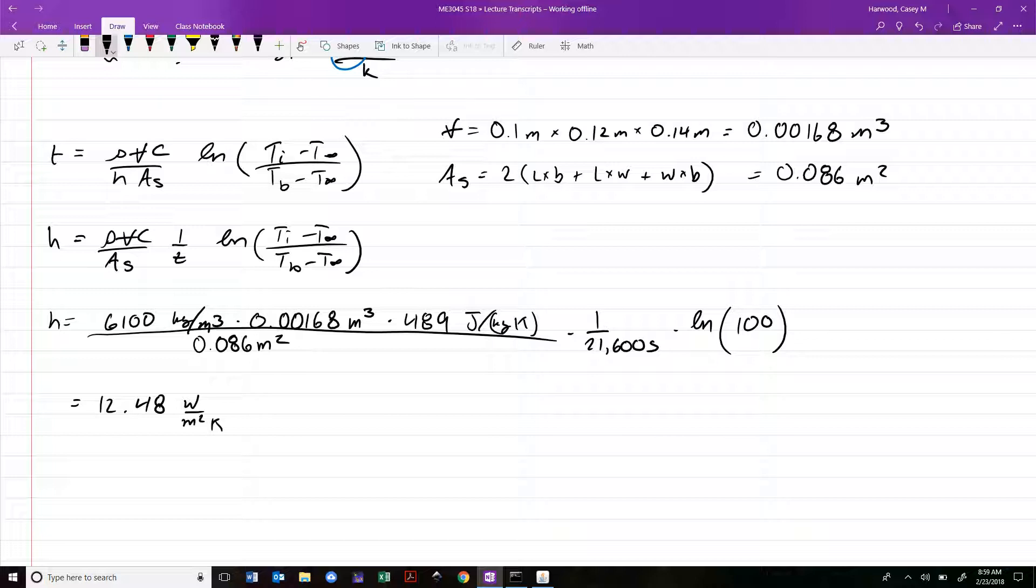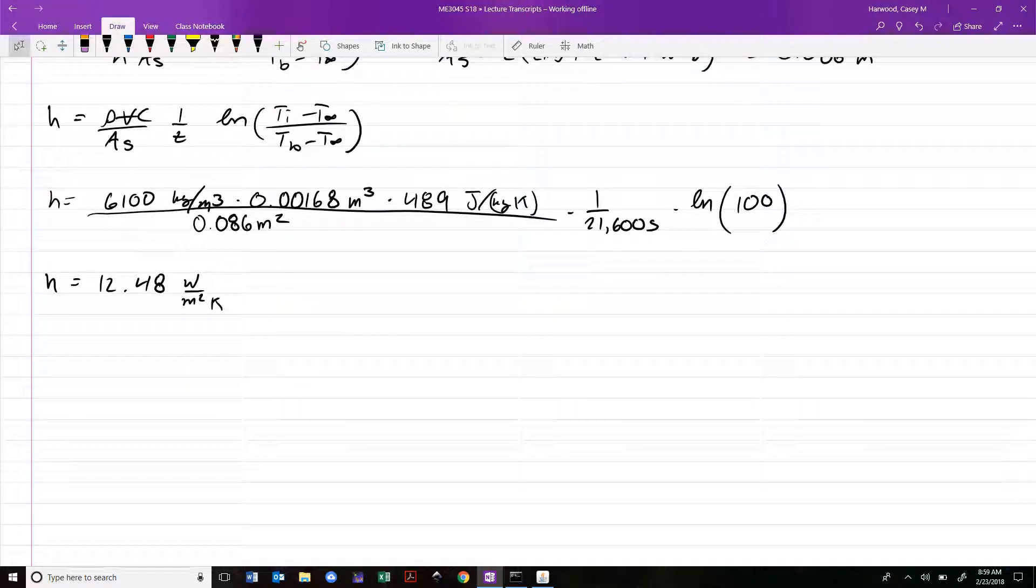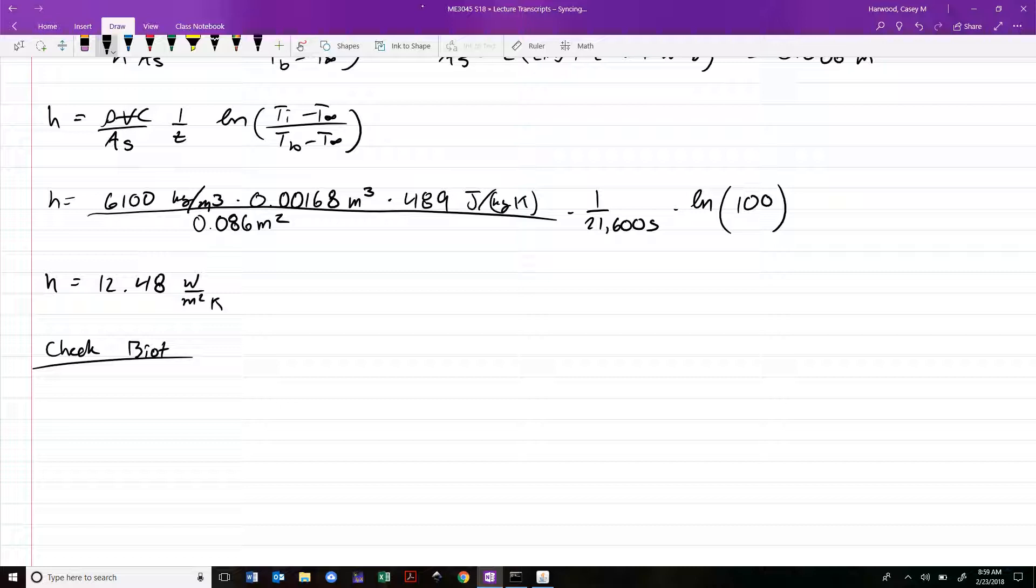Now we have H, we can go back and check the Biot number to make sure we didn't just come up with a garbage solution. It's conceivable that if H were really large, if the convective cooling were really important to the problem, we can go back, calculate the Biot number, find it's larger than 0.1, and have to scrap the entire solution. I promise that's not the case here. To check the Biot number, the last thing we need is the characteristic length, volume over surface area, which works out to be 0.02 meters.